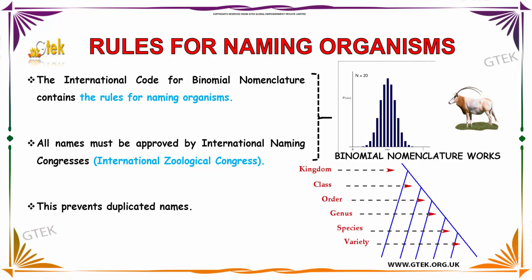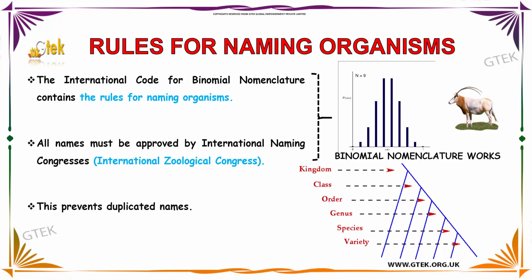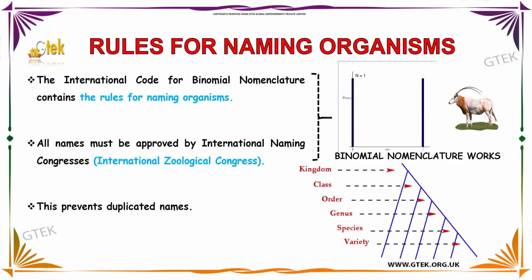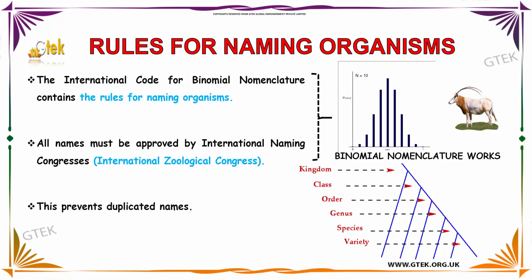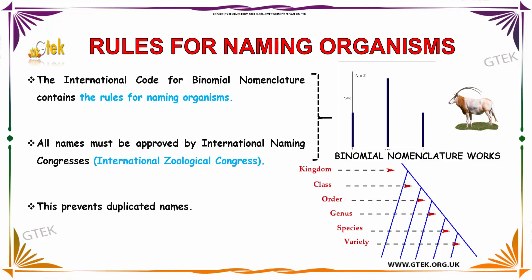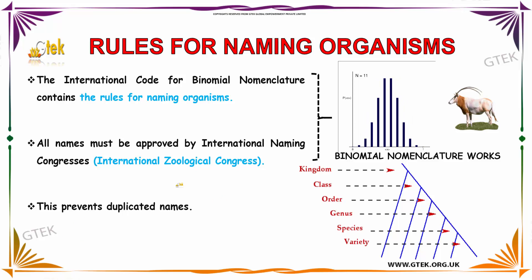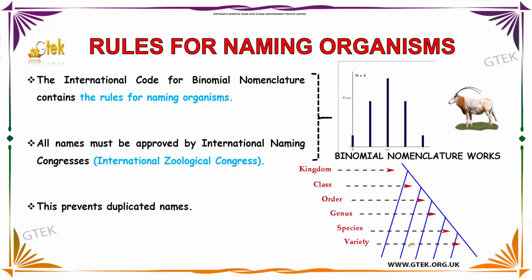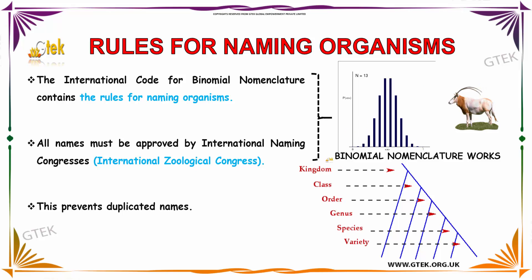Now we are going to see about rules for naming organisms. The international code for binomial nomenclature contains the rules for naming organisms. All names must be approved by the international naming congress, that is the international zoological congress. This congress prevents duplicated names. Here, you can see how binomial nomenclature works.